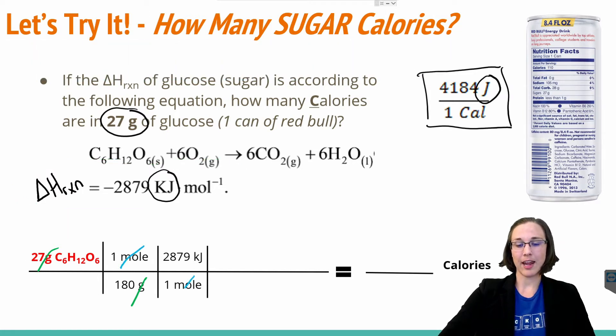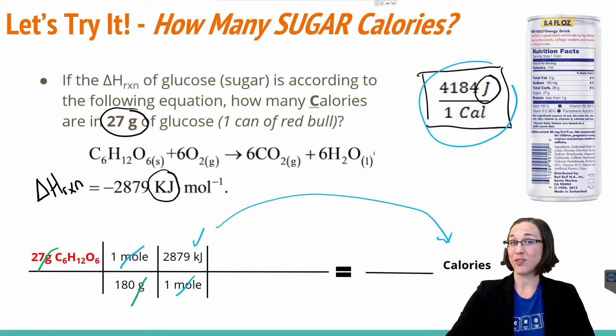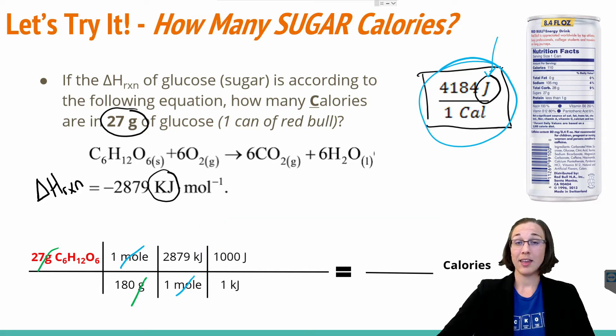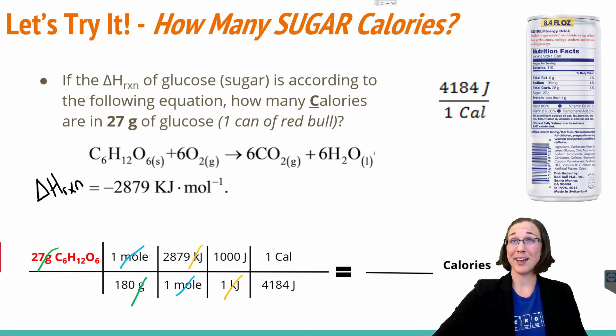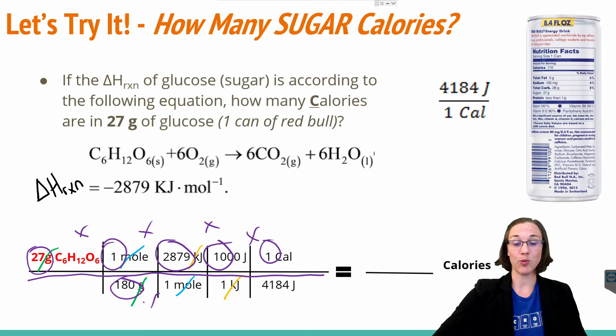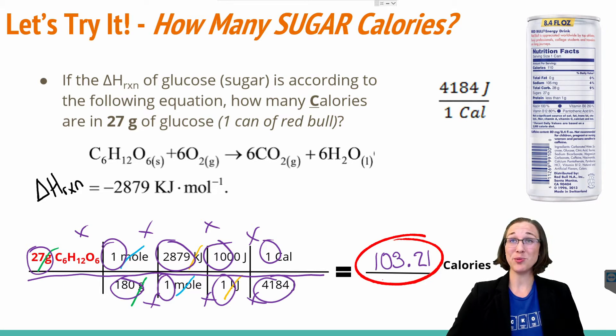Now the moles will cancel, and I'm left with kilojoules. I need to get from kilojoules to calories. As we said before, we can use our new conversion factor for uppercase calories. But we need to get the kilojoules into joules first in order for these to cancel. So one kilojoule is equivalent to 1,000 joules. Here we see that our kilojoules cancel and we are in fact left with joules. We can finally plug in our new domino conversion factor piece and solve for calories. Now if we multiply across the top, multiply across the bottom, and divide those two answers, we get 27 times 1 times 2879 times 1000 times 1, all divided by 180 times 1 times 1 times 4184. To give us the final value of 103.21 uppercase calories.